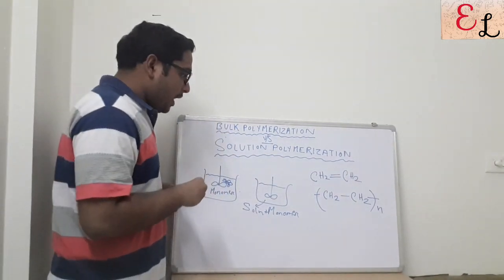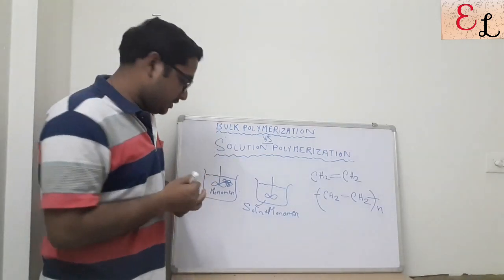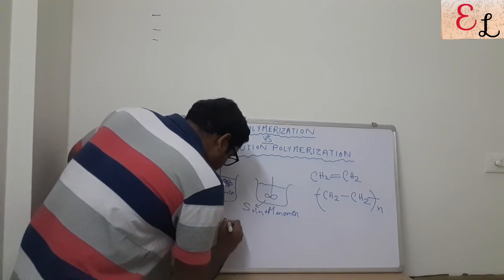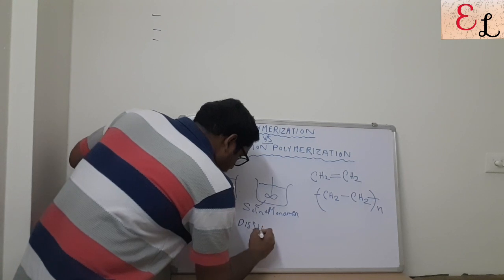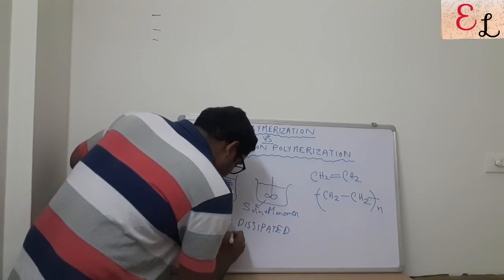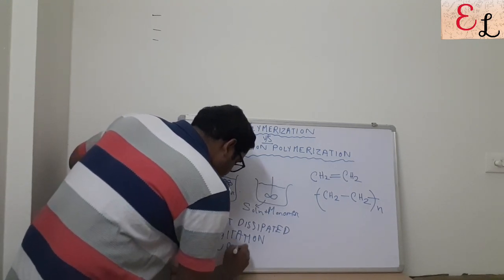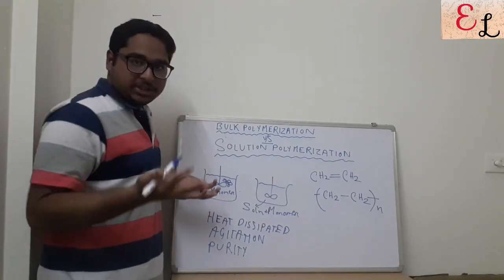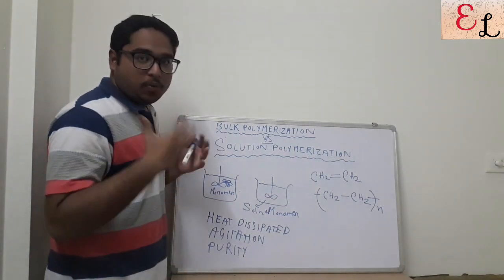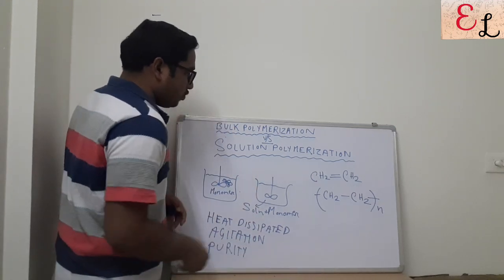We basically judge the two types of polymerization on three bases. Our basis for today's discussion is going to be: first, the heat dissipated from the system; second, the agitation or mixing; and finally, the purity. These are the three topics we are going to compare the two types of polymerization on, and we will judge what is best in which type and what are the advantages and disadvantages.